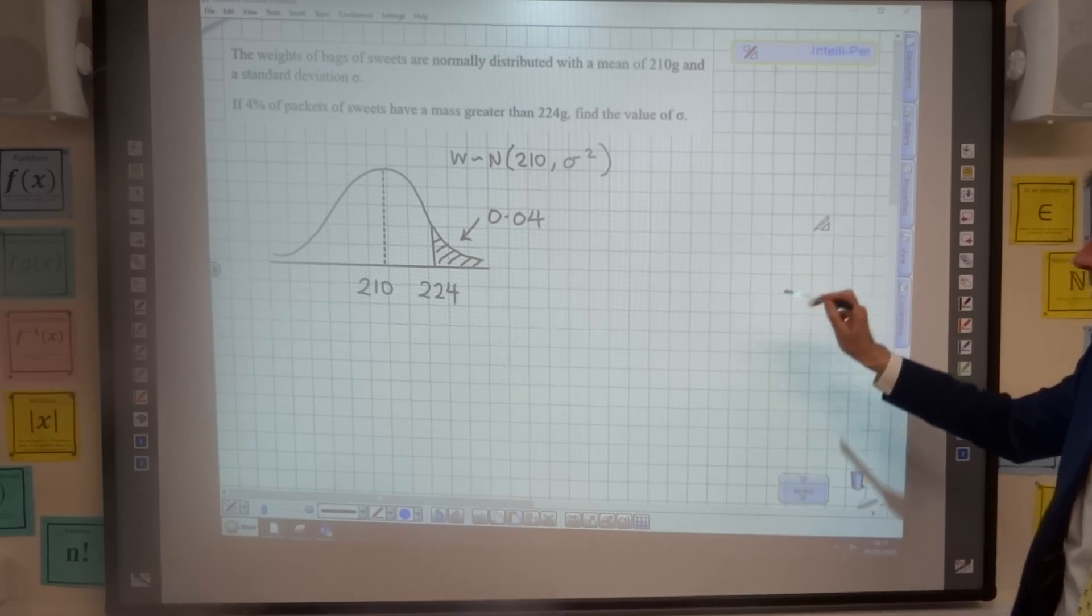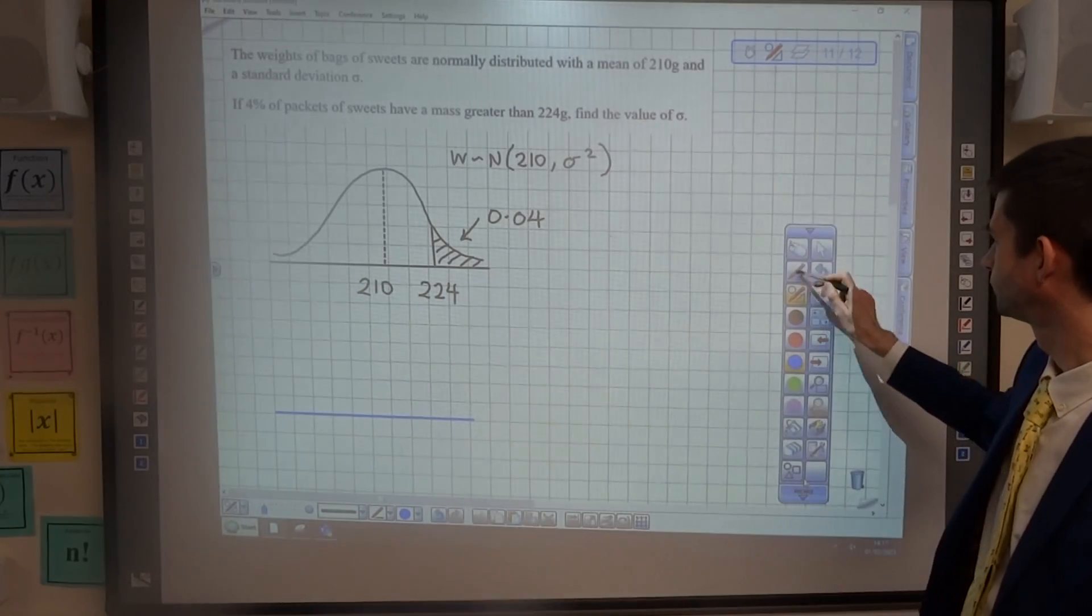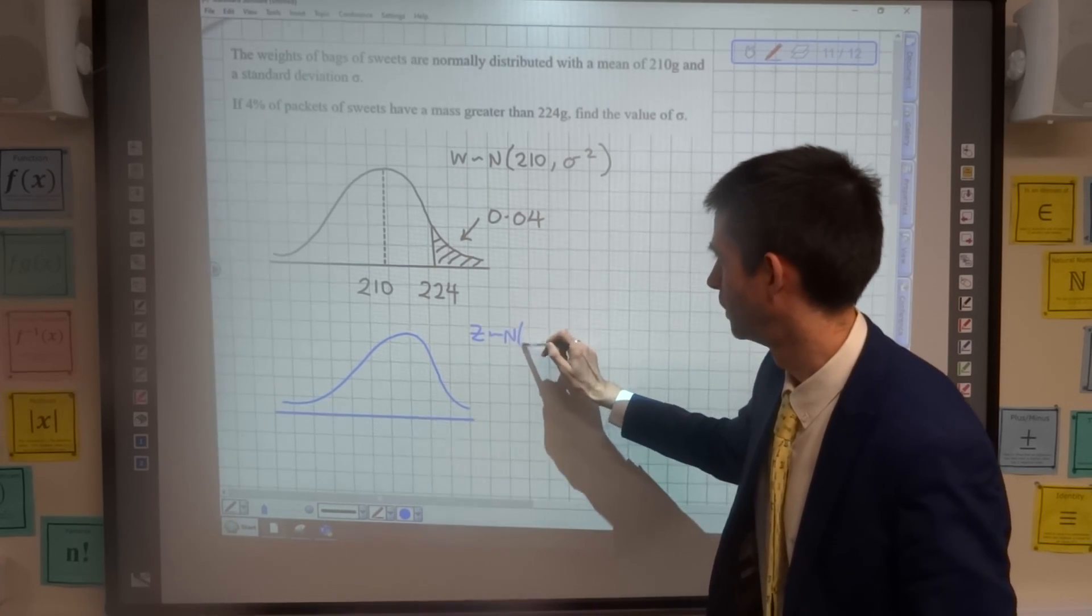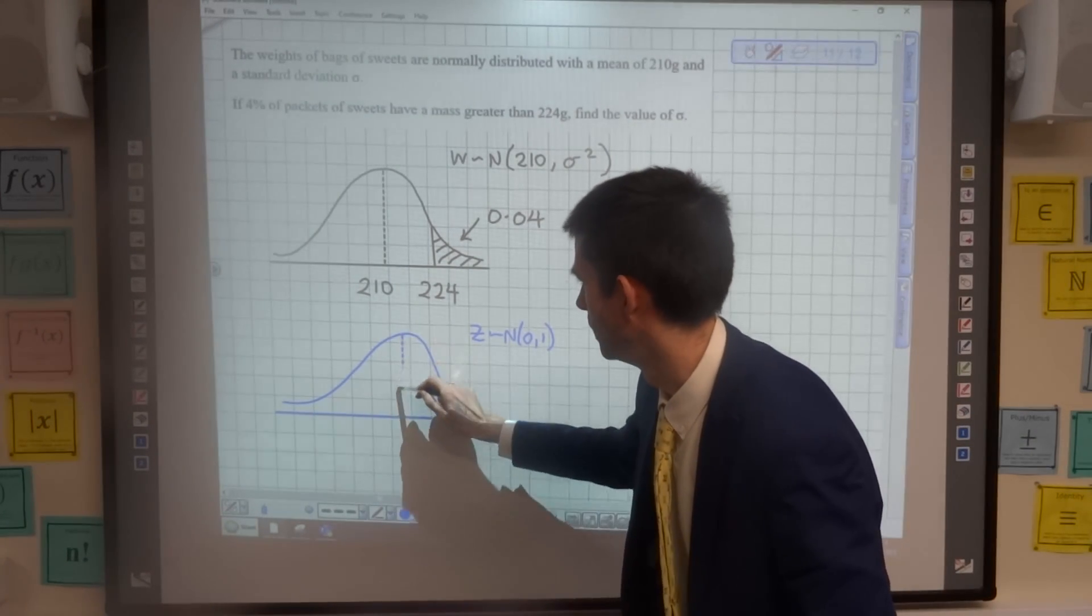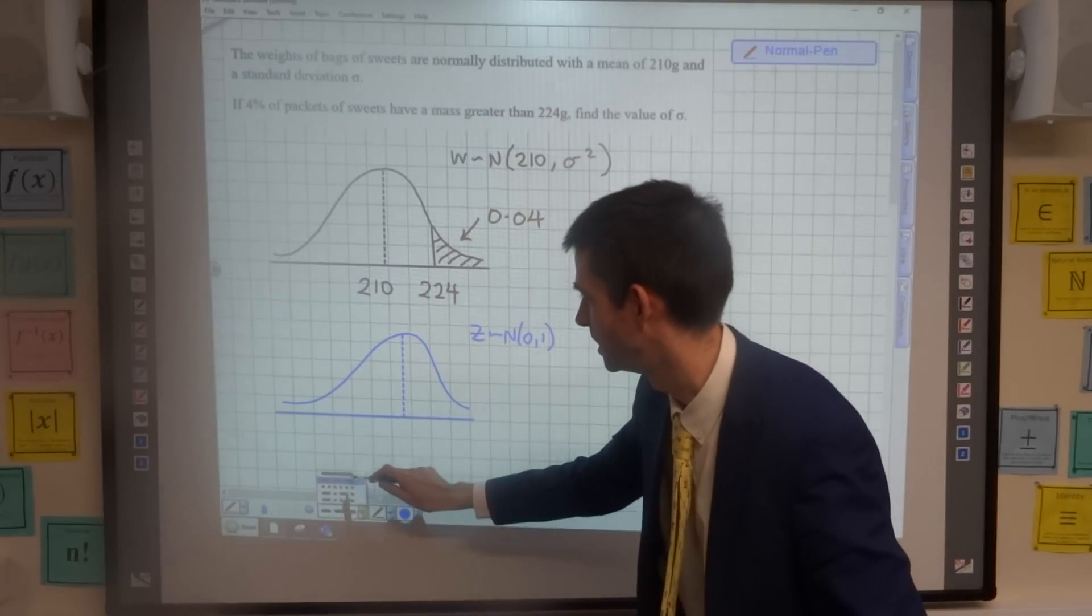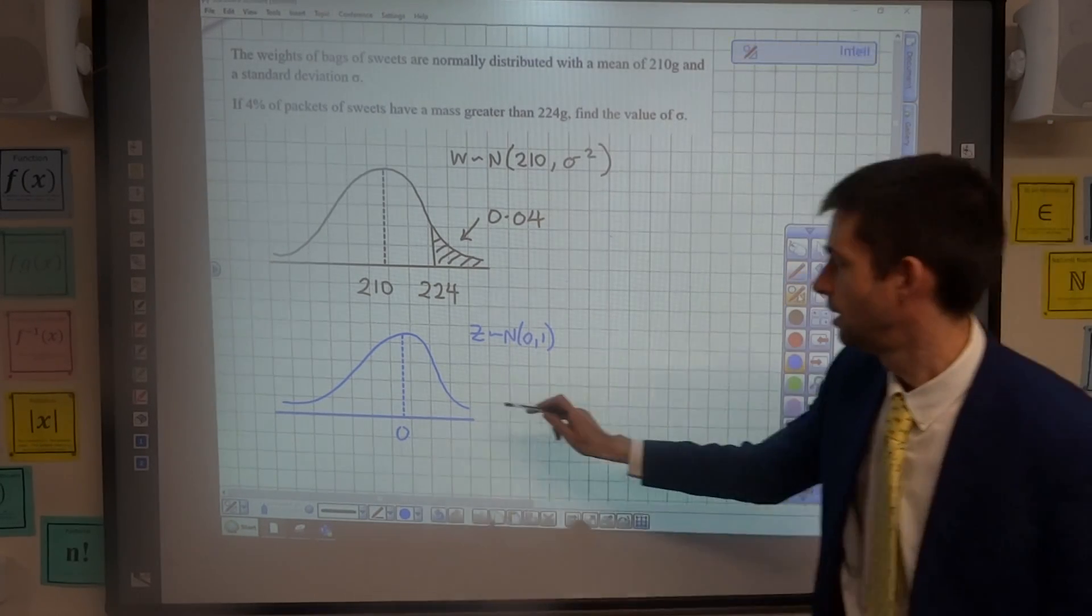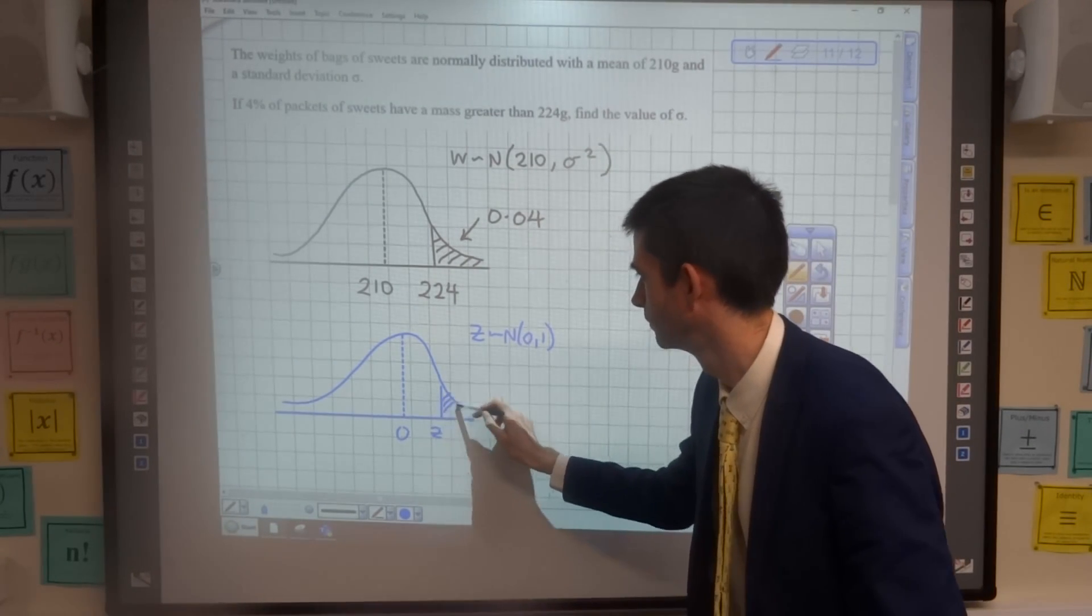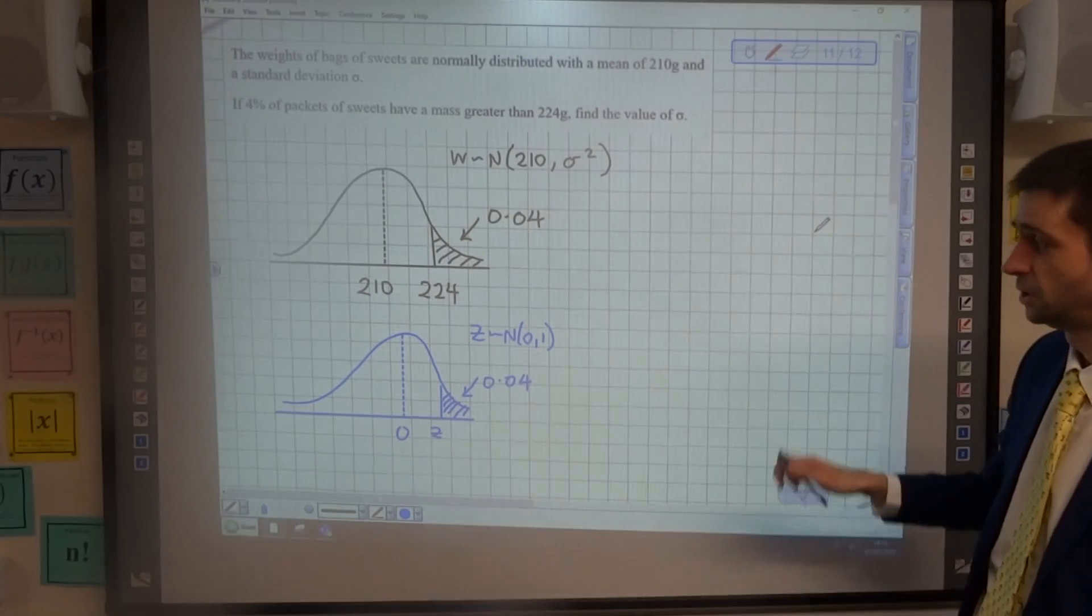What I'm going to do, underneath this first normal distribution, I'm going to draw another normal distribution. But this one is going to be Z following the normal 0, 1. I'll put the middle line in here, mean of 0. Now if I draw a line in here and label it as Z, and I say that this area here to the right of Z is 0.04...